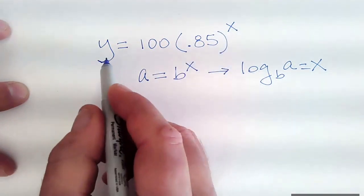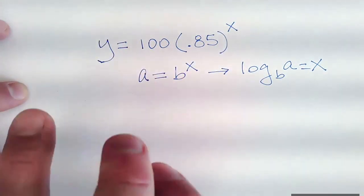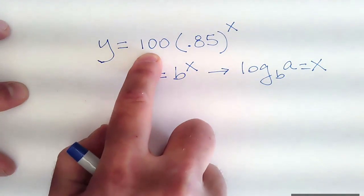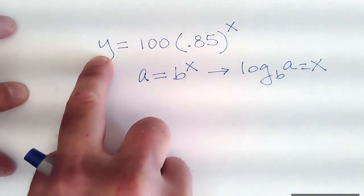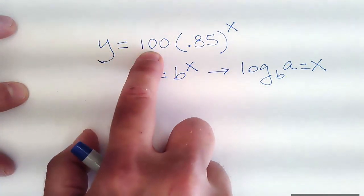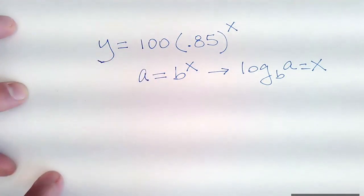I'm wondering, when is this value y going to be half of my initial value, 100? The question is, when is this going to be 50? Because my initial value is 100. So half of 100 is 50.